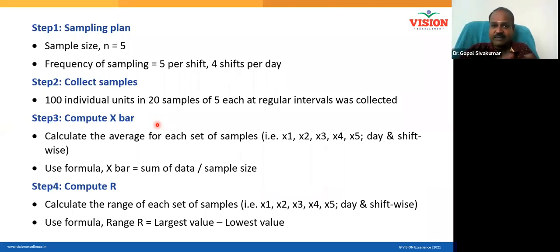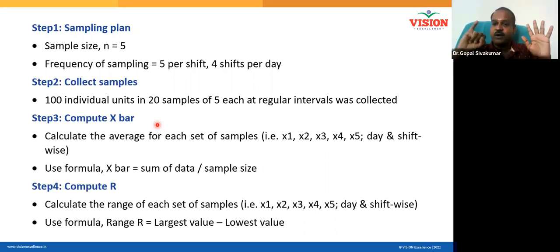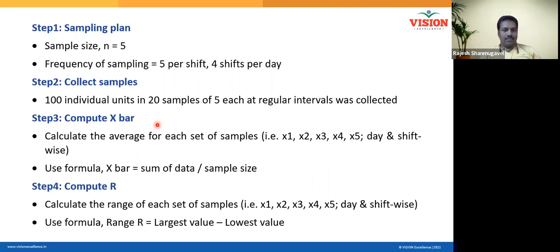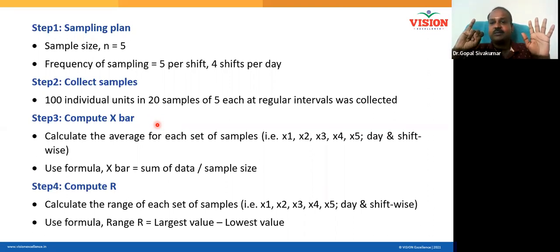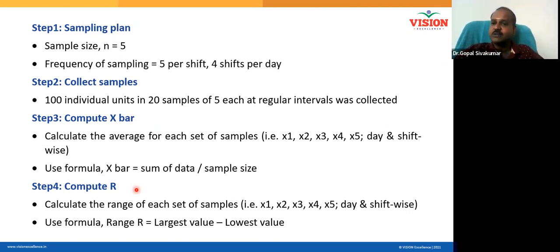Earlier we talked about variation between the days — six days. Within every single day there are four sessions. We want all six days to be effective and all four sessions to be effective. If you want all six days to be effective, you need to monitor x-bar — the subgroup average. If you want every session within each day to be effective, you should monitor the subgroup range.